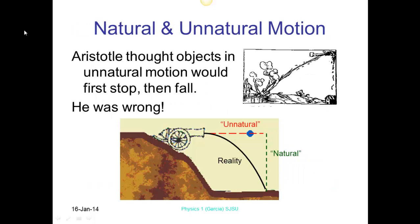So here's what Aristotle thought about if you shot a cannonball. What he was saying is the unnatural motion would first stop and then it would fall. So the unnatural motion would mean you're pushing it out there and then the natural motion would cause it to fall to earth. In reality, this is what actually happens. It follows a parabolic path. So that's one bit of evidence to refute Aristotle's idea.